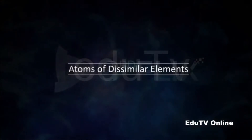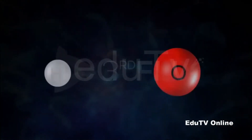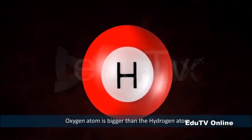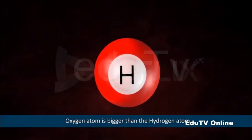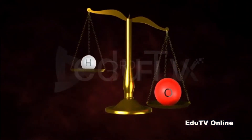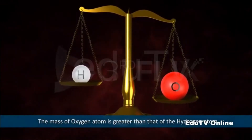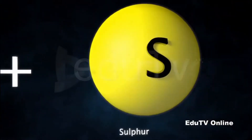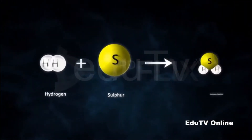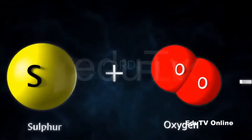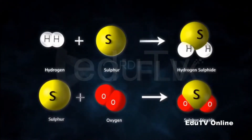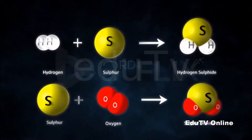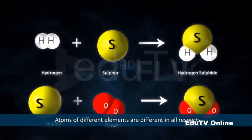Atoms of hydrogen and oxygen: The oxygen atom is bigger than the hydrogen atom, and the mass of the oxygen atom is greater than that of the hydrogen atom. If both hydrogen and oxygen are allowed to react with sulfur, hydrogen reacts with sulfur to form hydrogen sulfide, while oxygen reacts with sulfur to form sulfur dioxide — two different compounds. Therefore, Dalton proposed that atoms of different elements are different in all respects.